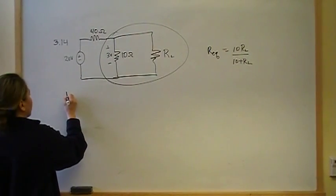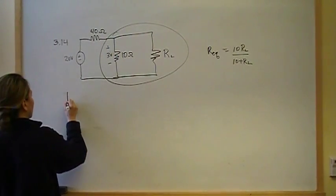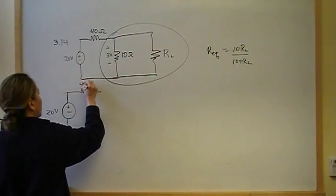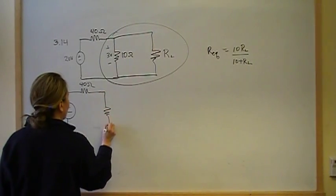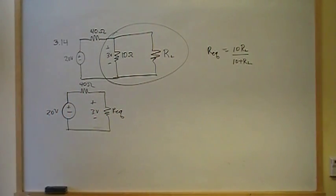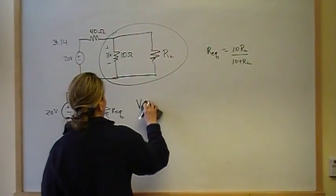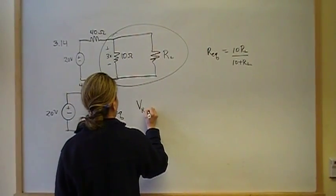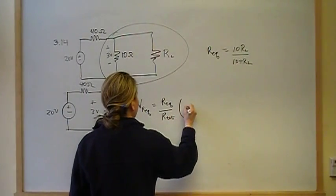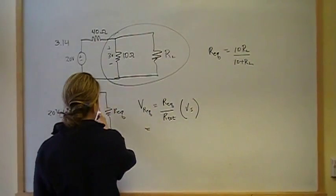So, then the new circuit looks like this. It's going to be 20. We know that's 3 volts. We use voltage division again. Voltage division says that the voltage V of RL, so REQ is going to be REQ over R total times V source.